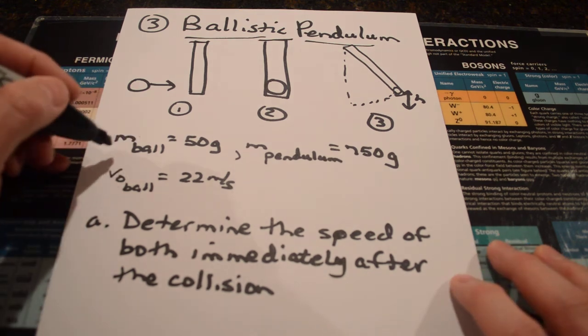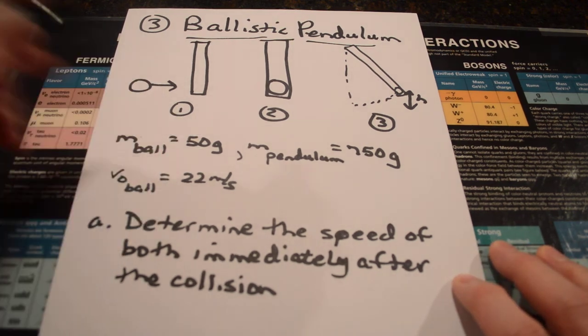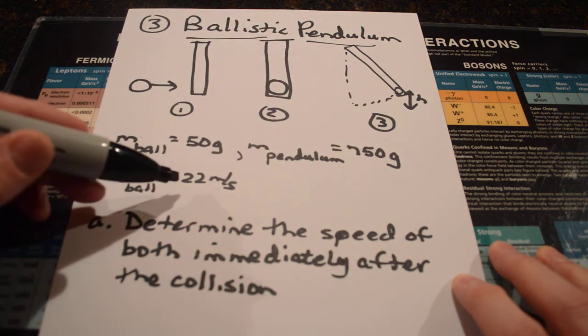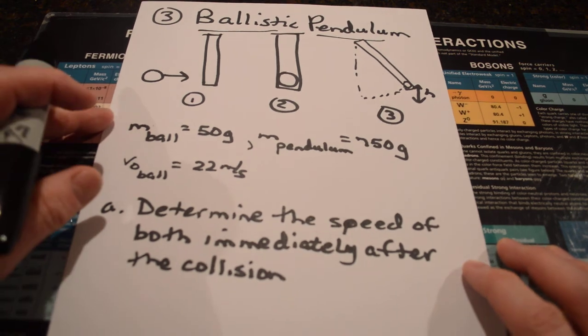The information given in the problem is the mass of the ball was fifty grams. The mass of the pendulum, seven hundred and fifty grams. And the initial velocity of the ball, twenty-two meters per second.